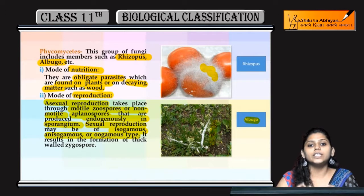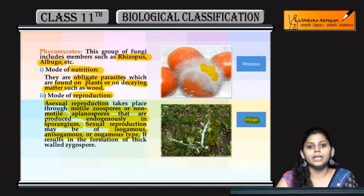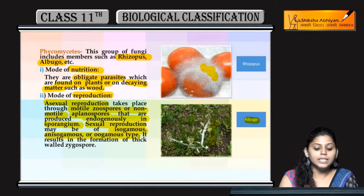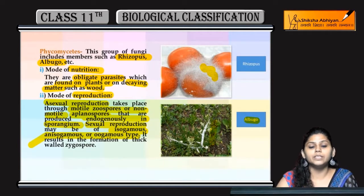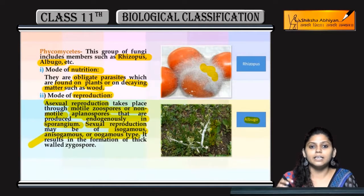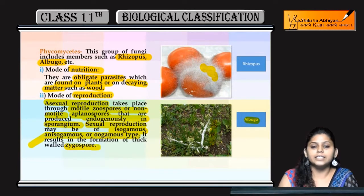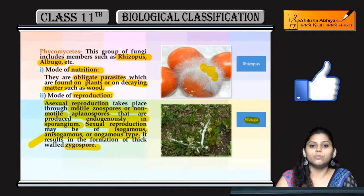Isogamous type mein jo gametes hote hain woh dekhne mein similar hote hain — differentiate nahi kar sakte kaunsa male hai ya female, but unke functions different hote hain. Anisogamous and oogamous mein dono dekhne mein different hote hain aur differentiate kar sakte hain. In ki fusion se zygospore banta hai.